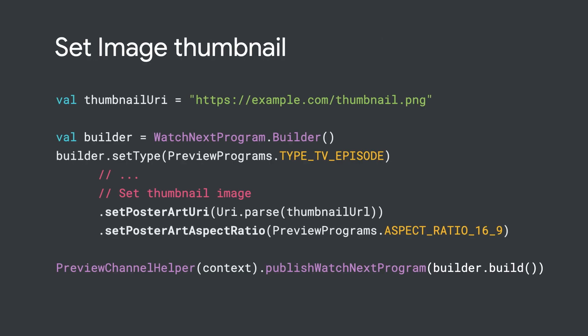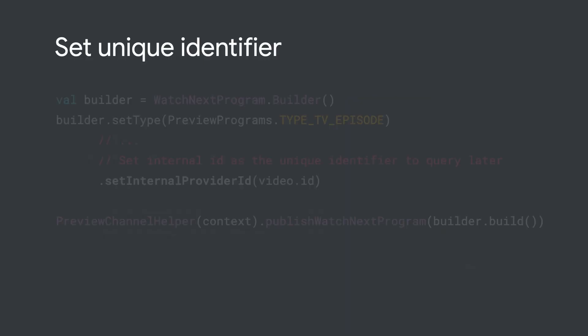Since TV is such a large screen located at a distance, the image is one of the first things your users observe. If you set the right image thumbnail URI, it will show that as a background to the card to give a visual cue to the user. For episodes, we recommend adding an image URL of that specific episode as compared to the general series or season image. You could also add the thumbnail at the exact timestamp of the video for a richer user experience. In order to query the content in the Watch Next row and match with your media feed, use the internal provider ID as a unique identifier between your app and the Watch Next row.